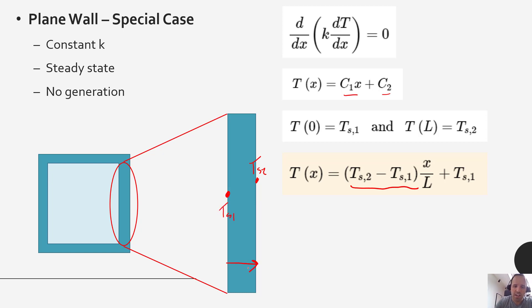And if we have x going this way and here at the far right side of the wall we have x equal to L, this is how our temperature profile looks.